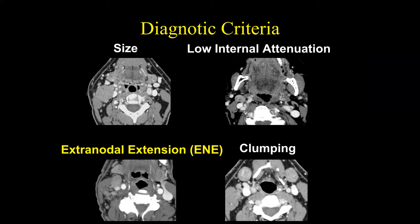The diagnostic criteria we use include: size, low attenuation in the periphery of lymph nodes representing small metastatic deposits, clumping of multiple lymph nodes on the ipsilateral side of the tumor (which warrants upstaging), and extranodal extension — the extension of lymph node metastasis outside the confines of the lymph node capsule.